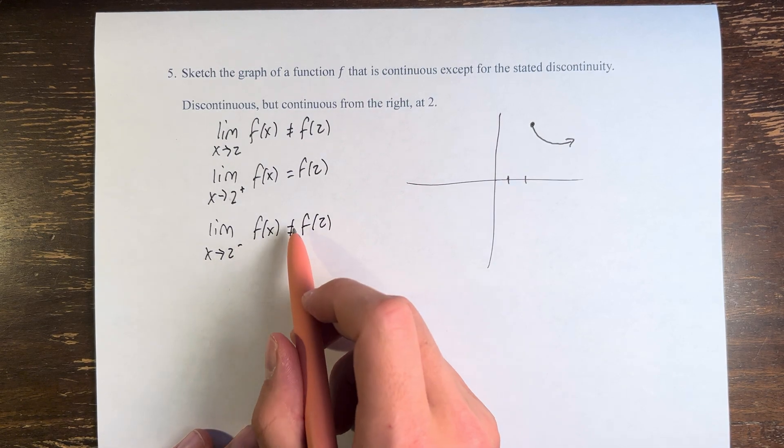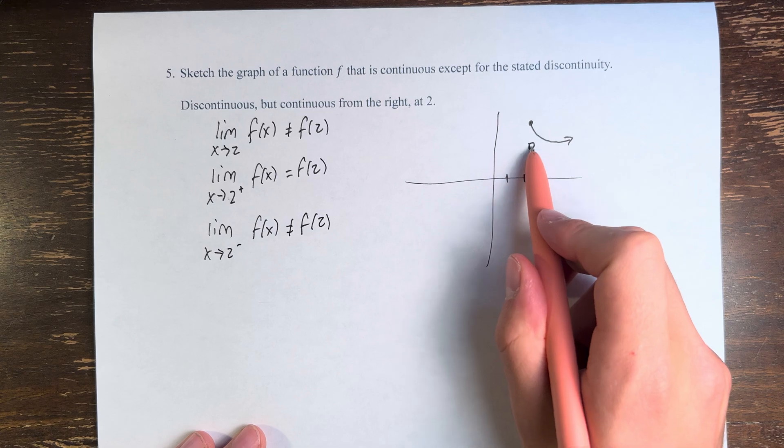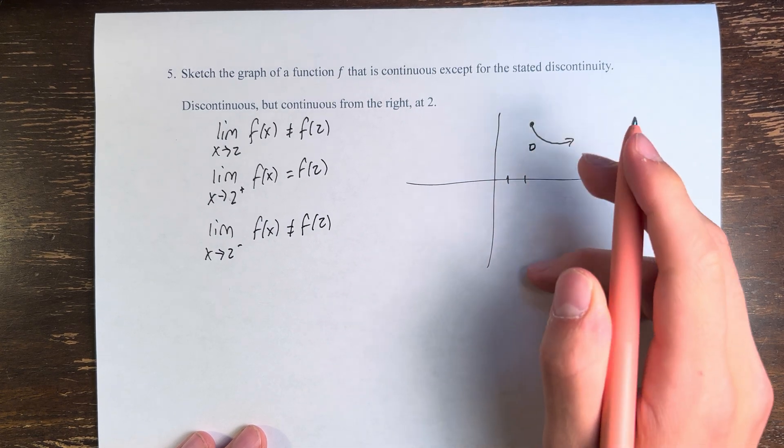And from the left, it's not equal to that, so it approaches some other point. We do an open circle to show that the function approaches it but does not equal it.